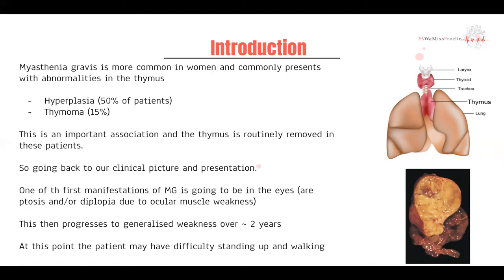You might be wondering why the ocular muscles get affected first — they're definitely not doing the most weightlifting, so to speak, and you have much bigger muscle groups that do that. But if you think about it, the eye muscles are one of the most active muscles in the body. Myasthenia gravis isn't about strength of contraction, but frequency of contraction and that fatigability. With your ocular muscles, which are almost always moving, that's where you're going to have your first presentation.